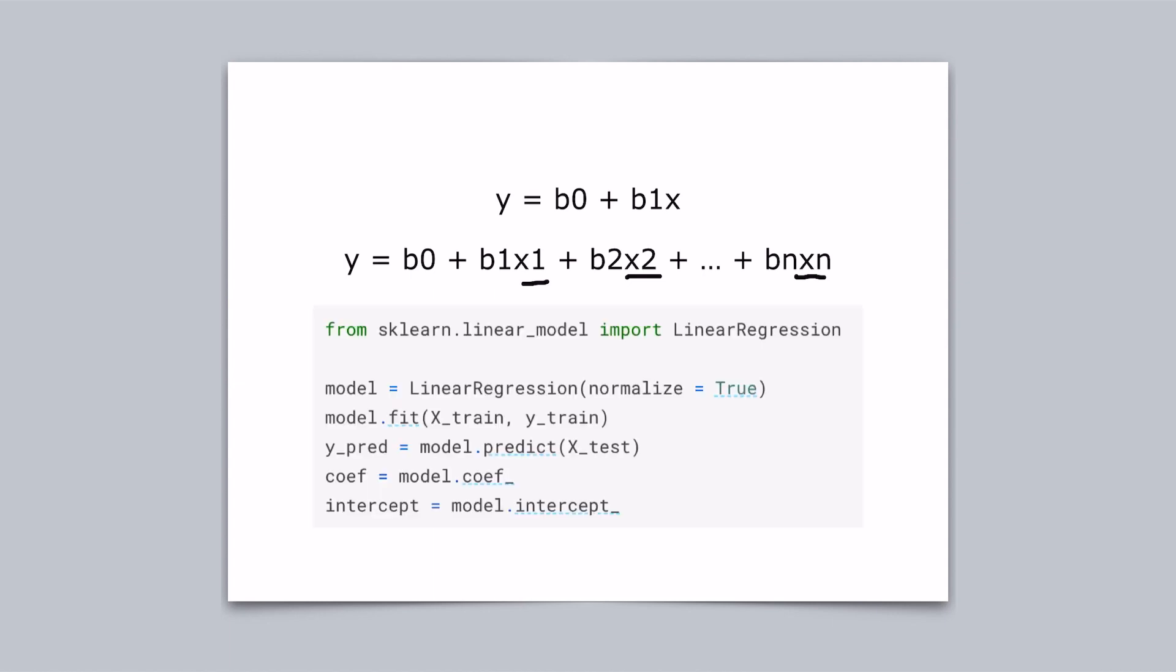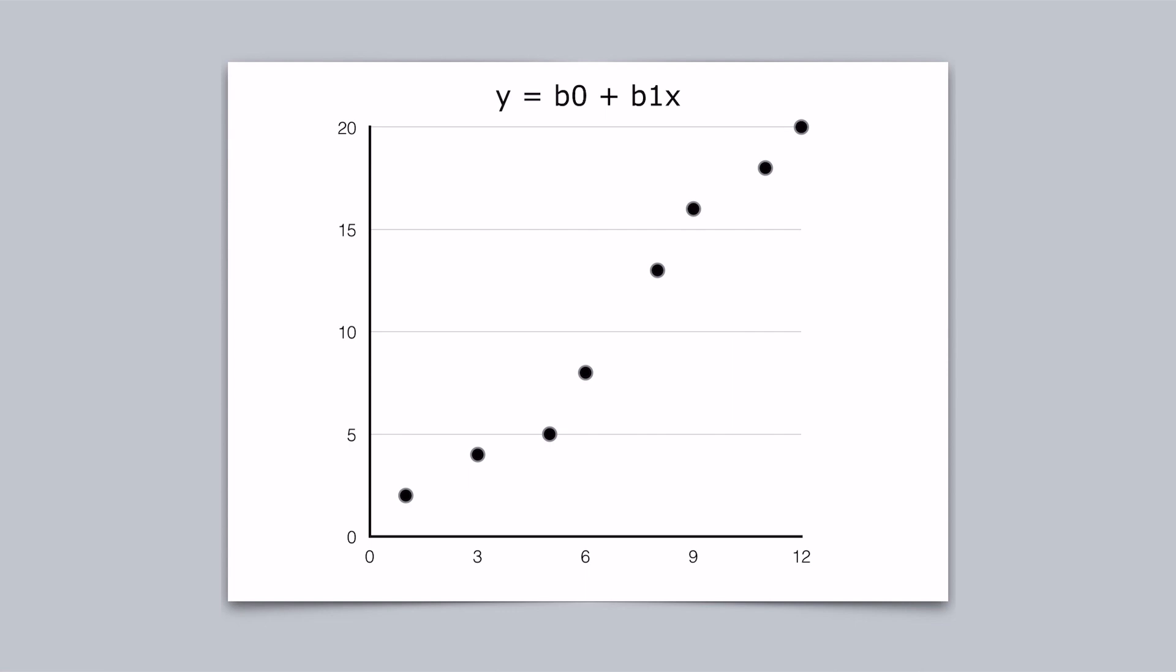Python scikit-learn has provided a built-in function to implement the linear regression. There are several attributes returned from this function: the coefficient values b1, b2, b3 and so on; model intercept which is the constant value b0. Scikit-learn linear regression uses ordinary least squares to find and evaluate the optimal line to fit the data,